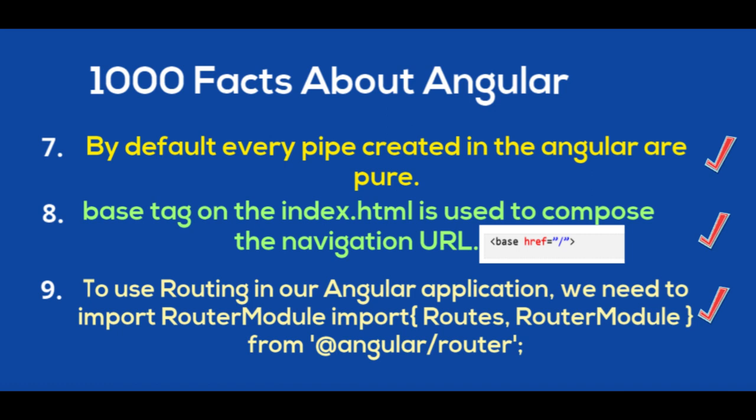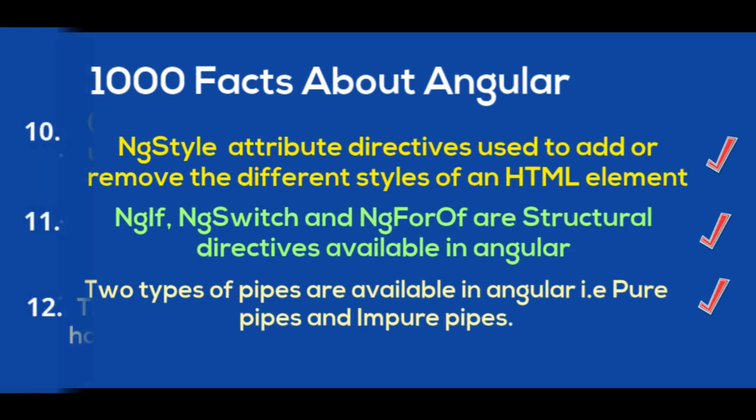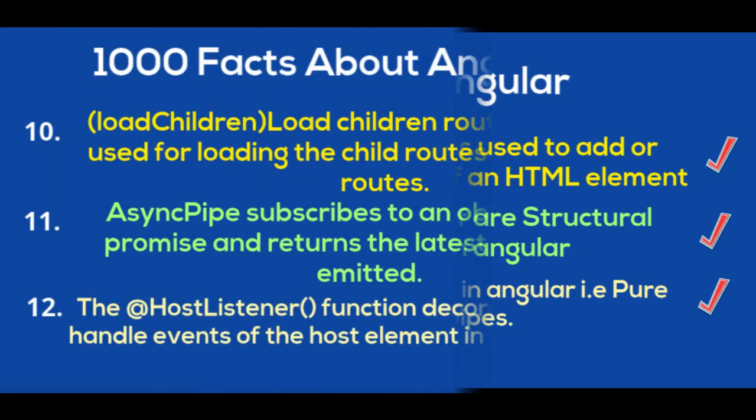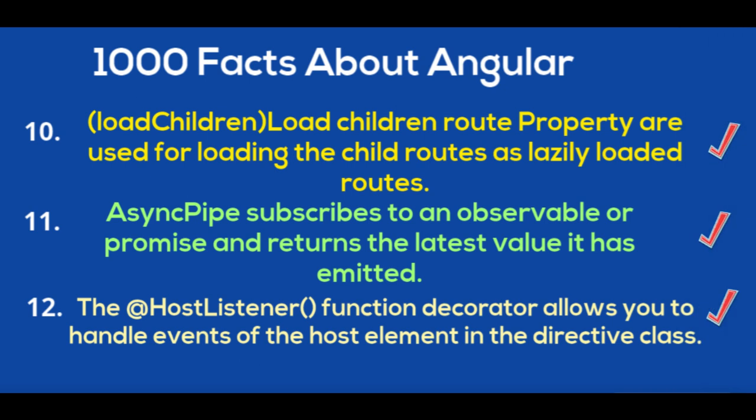To use routing in an Angular application, we need to import RouterModule from '@angular/router'. The loadChildren route property is used for loading child routes as lazily loaded routes. The async pipe subscribes to an observable.